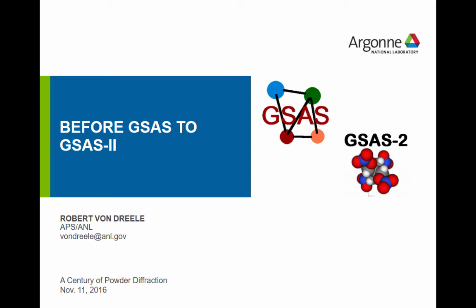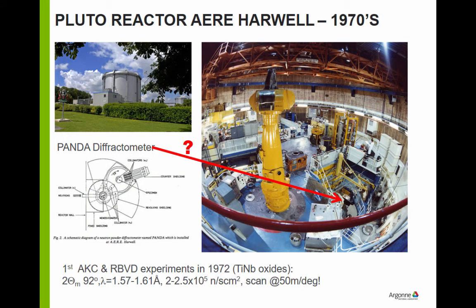Its long name is pentaerythritol tetranitrate. When I was at Los Alamos, I did high-pressure experiments on a high-explosive. So where did all my experience start? In the early 1970s, I was a postdoc at Oxford University working in inorganic chemistry for J.S. Anderson trying to do electron microscopy. My eyes weren't good enough for that. Tony Cheatham, who was also a postdoc working for Brian Fender, came around and said, 'Bob, how would you like to do some neutron powder diffraction?'